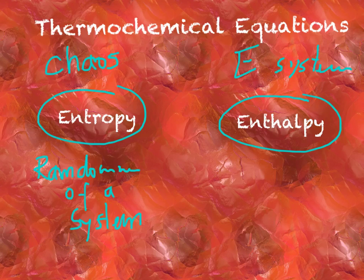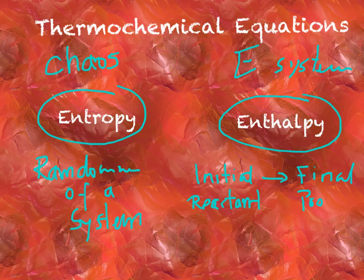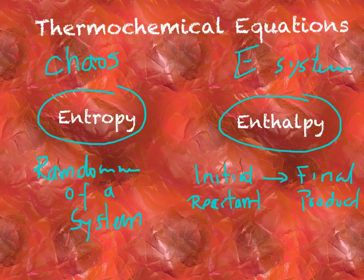In chemistry, you have an initial state and a final state. We normally call the initial state the reactant side, and the final state the product side. For enthalpy, you need to compare the energy content of the initial state versus the final state. If the initial state has more energy than the final state, the reaction lost some energy to the environment. But if the final state has more energy, the system gained some energy in the process — that would be endothermic.